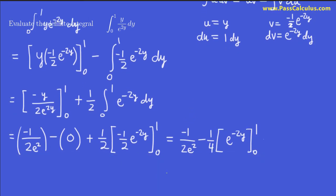So what are we going to do now? Minus 1 over 2e squared stays. Minus 1 over 4. Let's put 1 in here. We get e to the minus 2y. Or sorry, y is 1, so it's just e to the minus 2. Minus, when I put 0 in there, I get e to the 0, which is just 1. So there's our answer. We can probably make that a little bit cleaner.